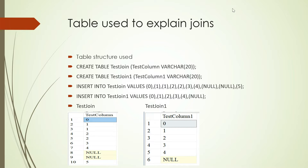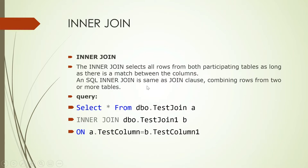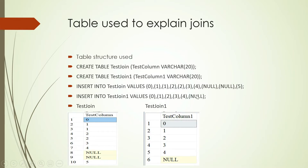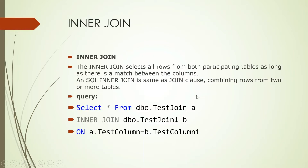Before going further, these are the tables I am using to explain the details of how joins work. I have two tables: test_join and test_join_one. These are the values populated in those tables. An inner join selects all the rows from both participating tables as long as there is a match between the columns.